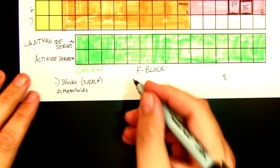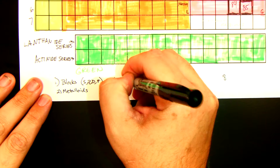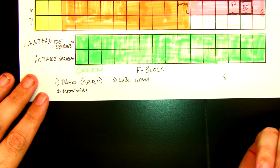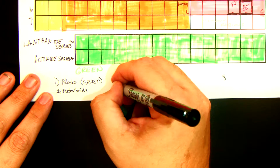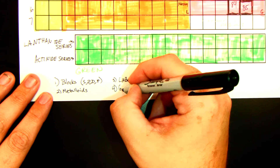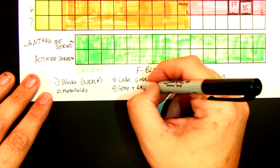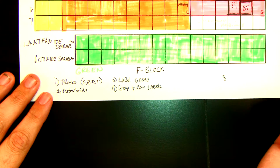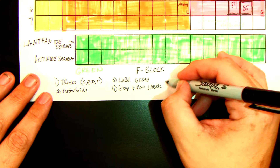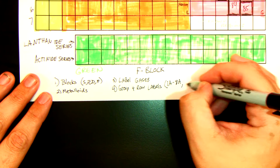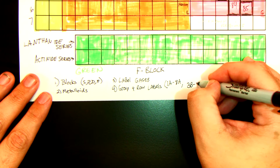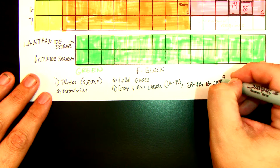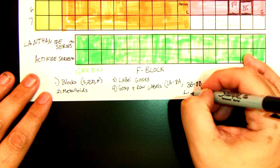Third, label the gases. And then four, put in your group and row labels — that's your 1A to 8A, your 3B to 8B, your 1B to 2B, and then your lanthanide and actinide series labels in your F-block.